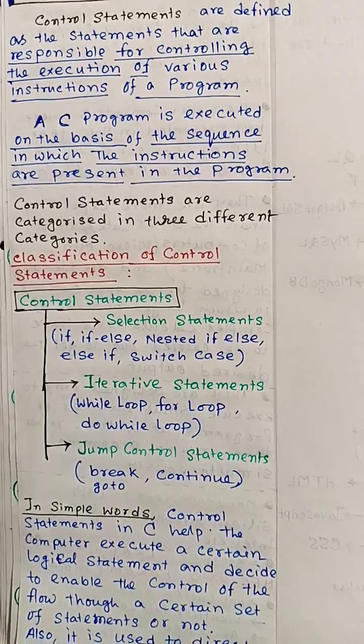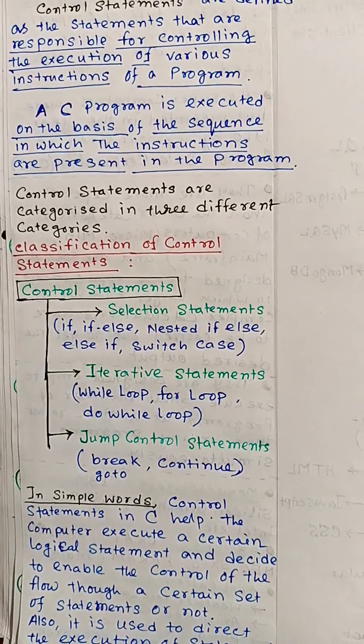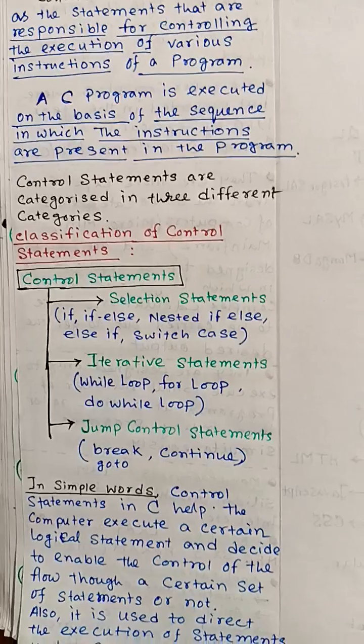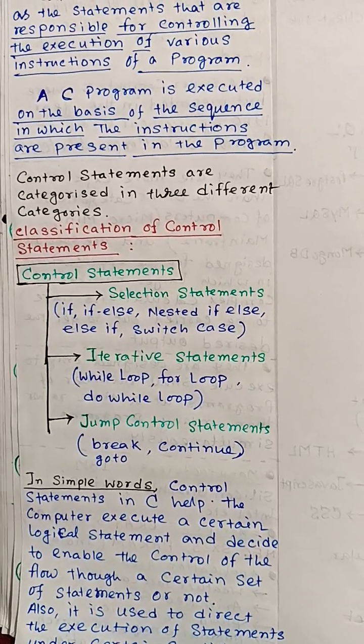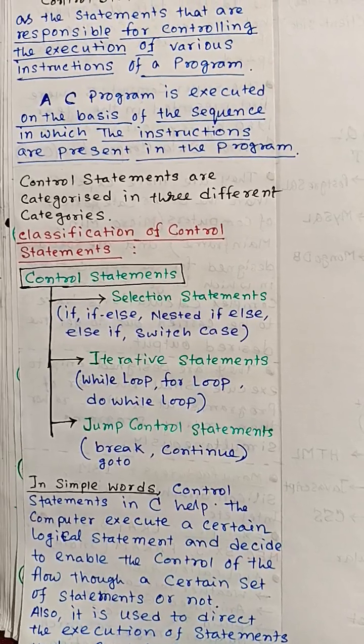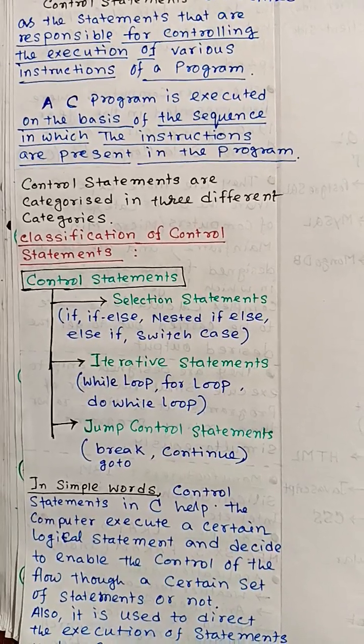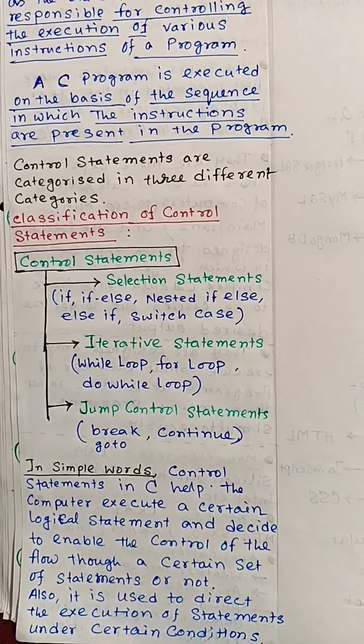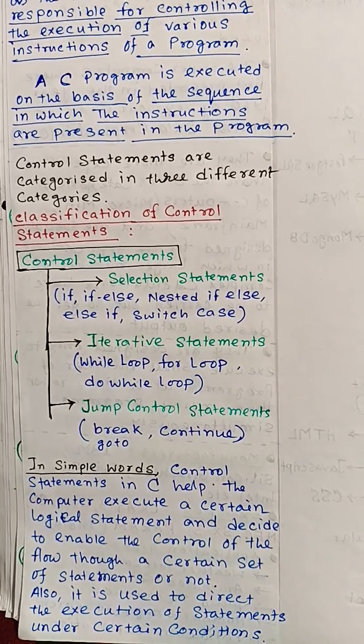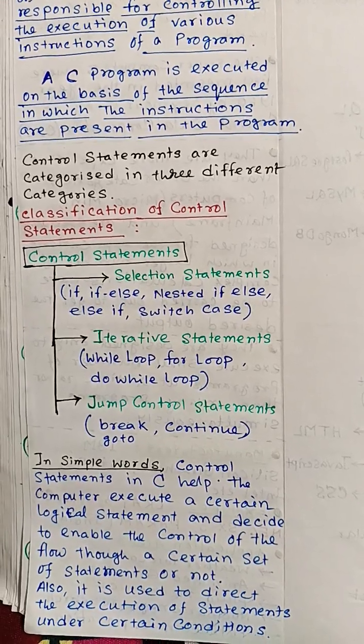In simple words, control statements in C help the computer execute a certain logical statement and decide to enable the control of the flow through a certain set of statements or not. It is used to direct the execution of the statement under certain conditions.